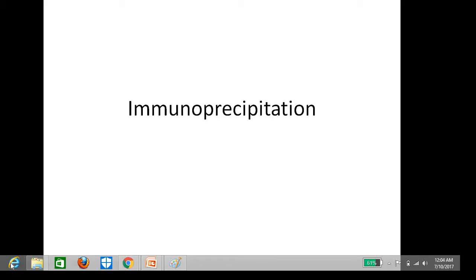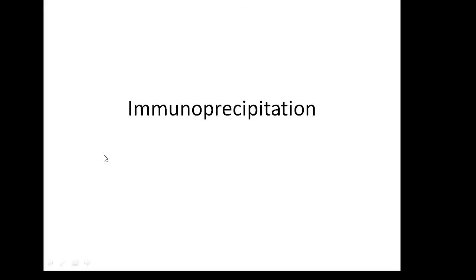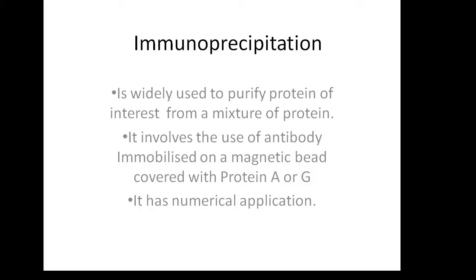In this lecture we will discuss immunoprecipitation, which is a technique widely used to purify a protein of interest from a mixture of proteins. Let's suppose we have a test tube containing many thousands of proteins, and our desired protein of interest is also present. In order to purify that particular protein, we use this technique. By the term 'immunoprecipitation' we understand that we are using an antibody to precipitate our desired protein of interest.